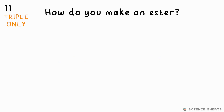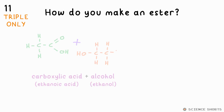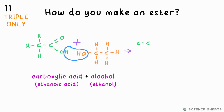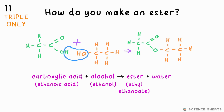Question 11. How do you make an ester? You make an ester by reacting a carboxylic acid and an alcohol. For example, ethanol and ethanoic acid makes ethyl ethanoate. An H and OH are kicked out, so water is also produced from the reaction.